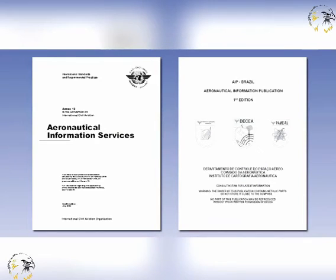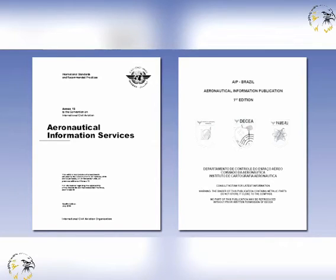The Aeronautical Information Service, AIS, has been established to ensure that the flow of all aeronautical information necessary for the safe and efficient navigation of international air traffic is maintained. Annex 15 of the ICAO Convention specifies the requirements for this important provision.